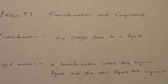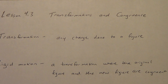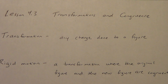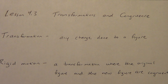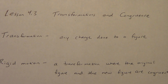Rigid motion means the first thing we started with and the new thing after the transformation are still congruent — it's the same triangle, the congruent triangle. A circle would be the same exact size if we moved it.